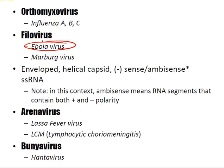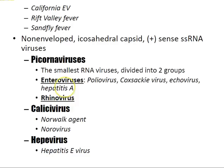Enveloped helical capsid negative-sense ambisense single-stranded RNA viruses contain RNA segments with both positive and negative polarity. These are the arenaviruses — Lassa fever and lymphocytic choriomeningitis (LCM) — and the bunyaviruses — Hantavirus, California encephalitis virus, Rift Valley fever, and Sandfly fever.